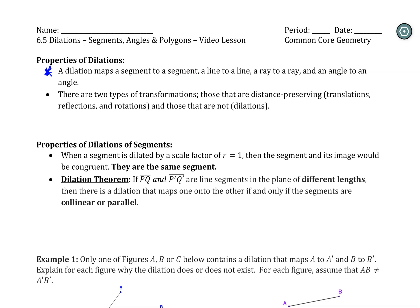With respect to transformations, there are distance-preserving ones — things like a translation, reflection, and a rotation. We called them basic rigid motions because when you do them, it doesn't change the size or shape of the object. But dilations are not basic rigid motions because they change the size of the figure. So we can't guarantee that everything is going to be the same. The angle measures are preserved, but not the side lengths.